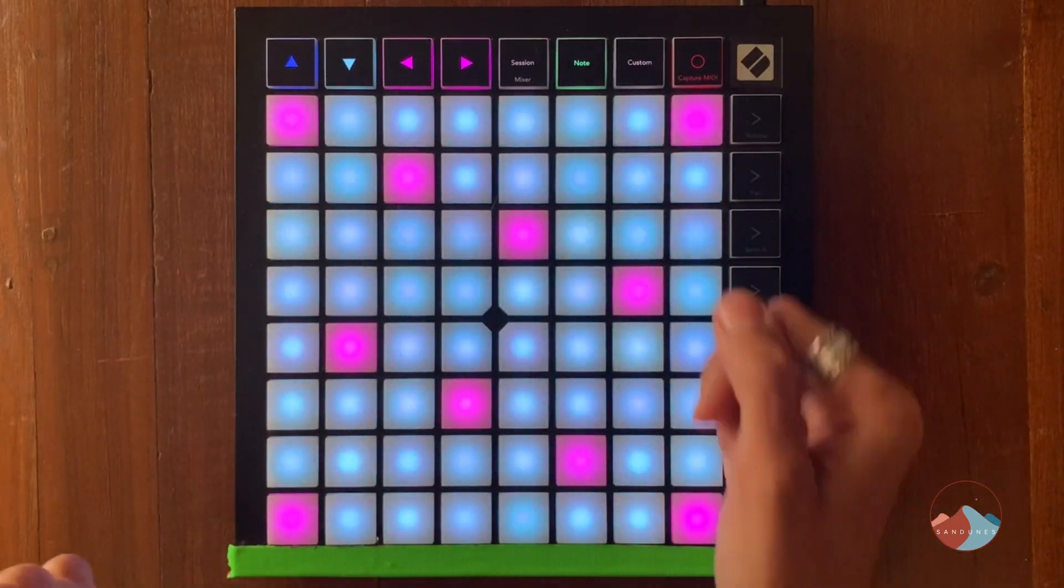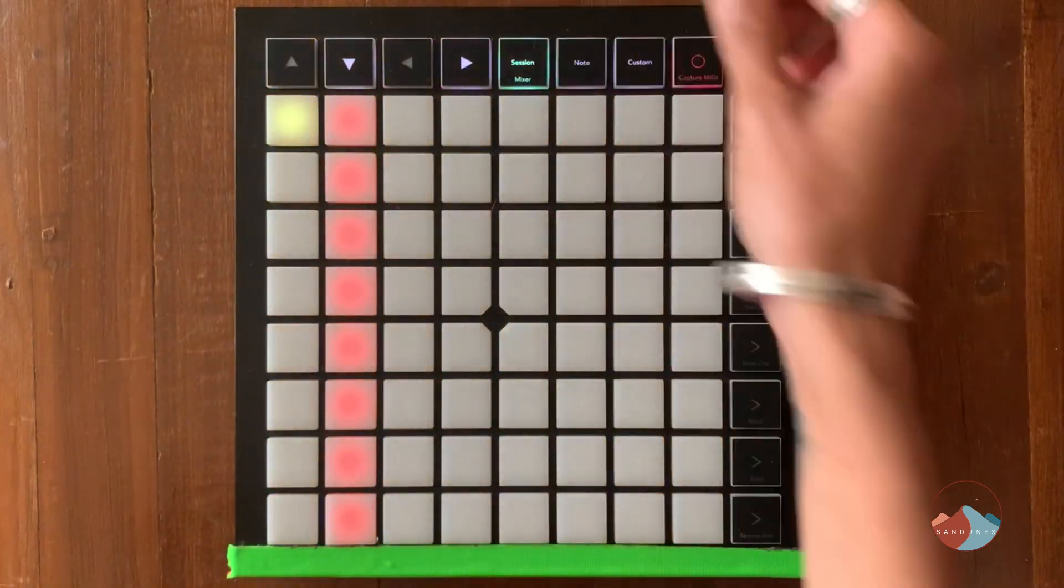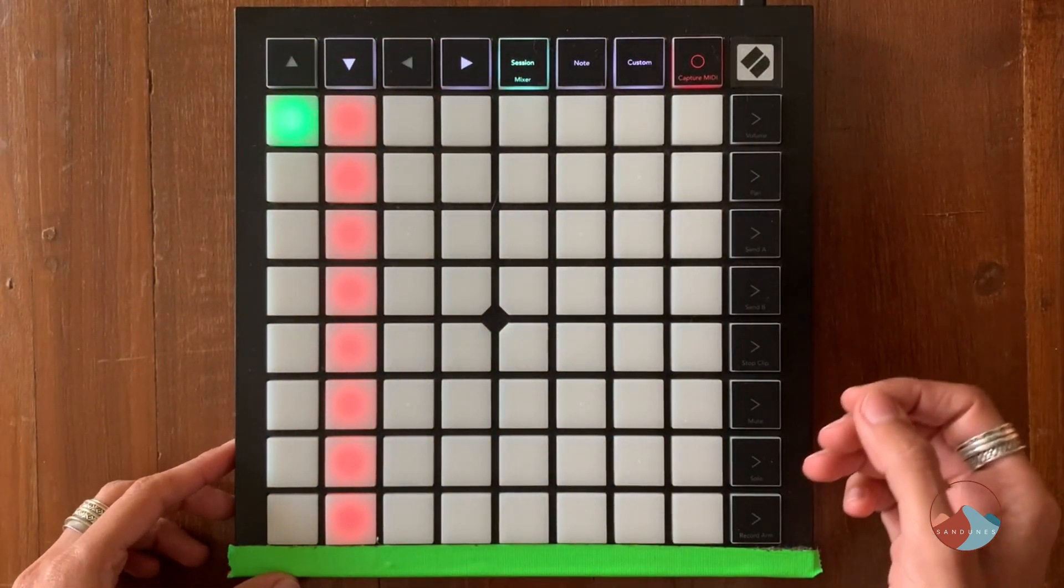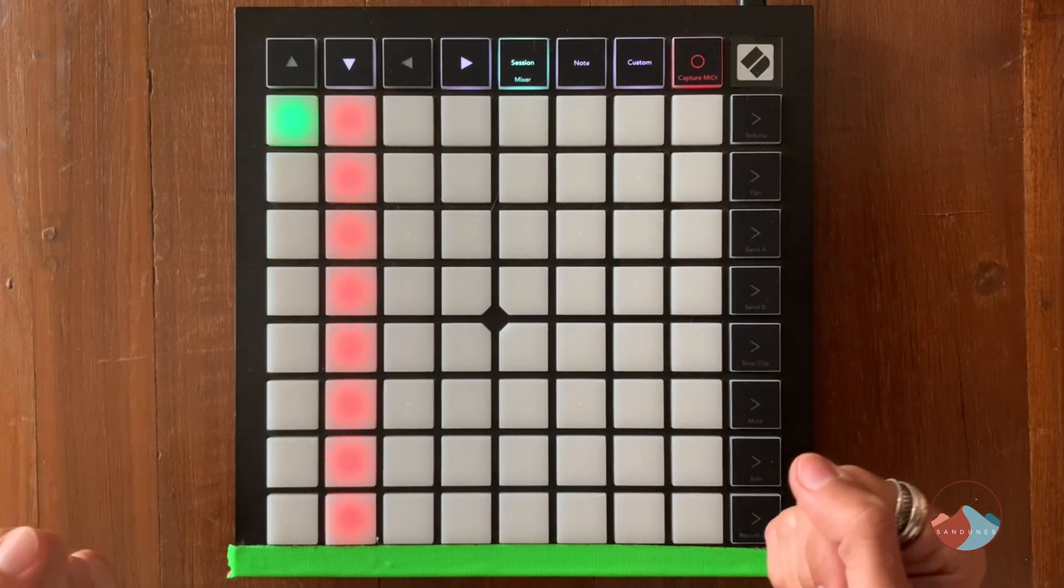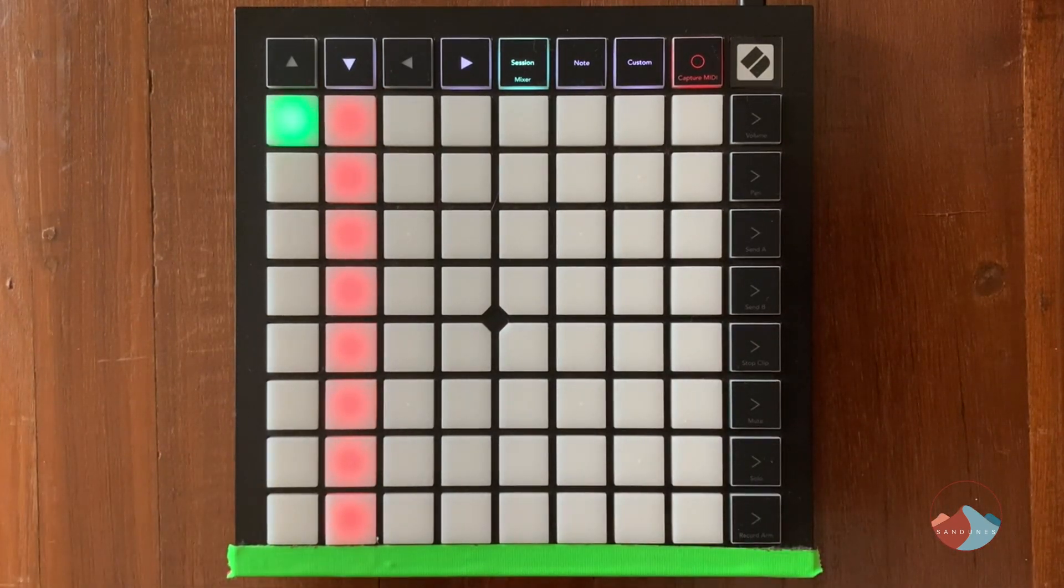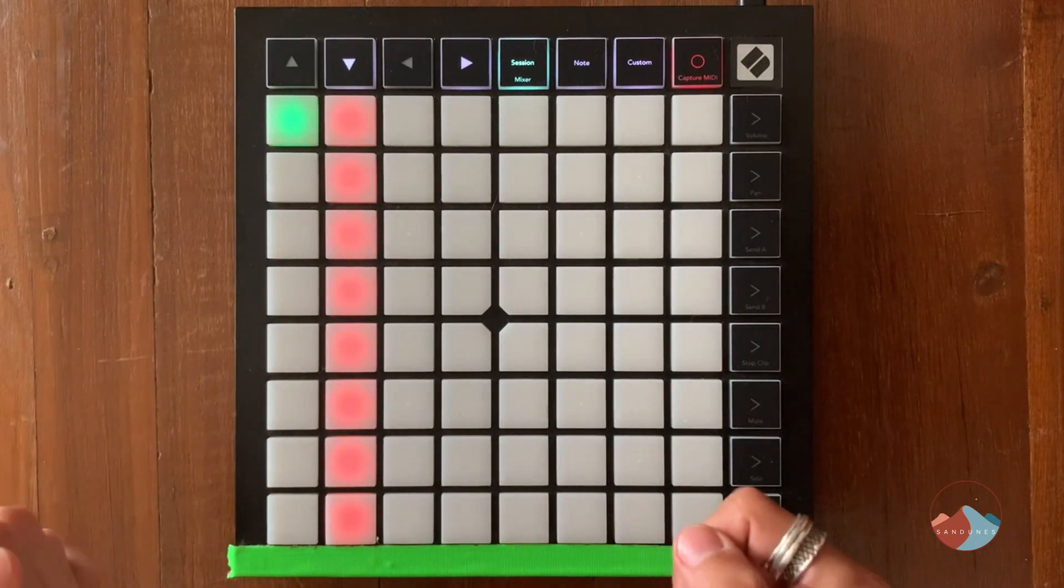I have an instance of wavetable loaded up on the second track. By using the scene launch button, I trigger the groove and now I'm going to jam out some chords in note mode over the groove and use that as the second layer of my track.